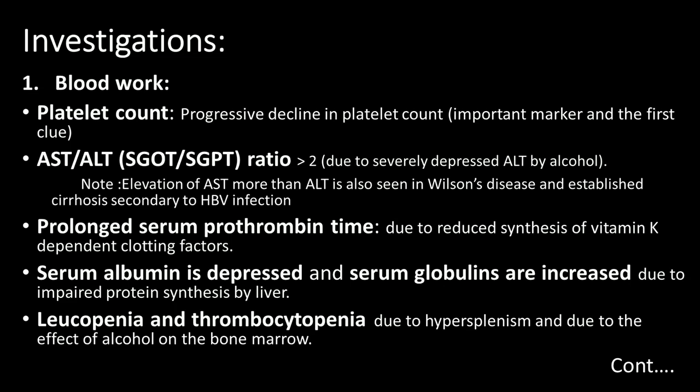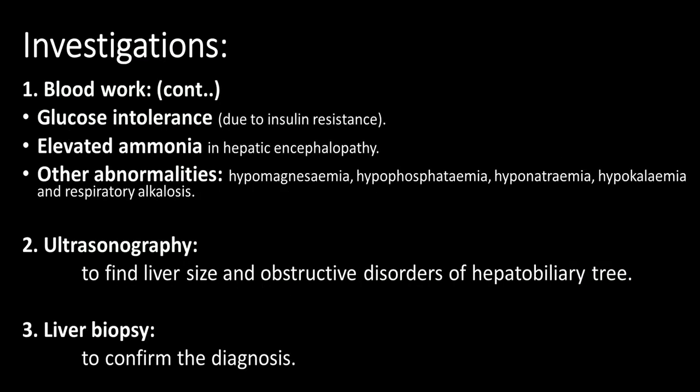Note: elevation of AST more than ALT is also seen in Wilson's disease and established cirrhosis secondary to HBV infection. Prolonged serum prothrombin time occurs due to reduced synthesis of vitamin K-dependent clotting factors. Serum albumin is depressed and serum globulins are increased due to impaired protein synthesis by the liver. Leukopenia and thrombocytopenia occur due to hypersplenism and the effect of alcohol on the bone marrow. Glucose intolerance is due to insulin resistance.